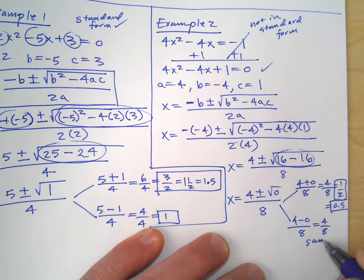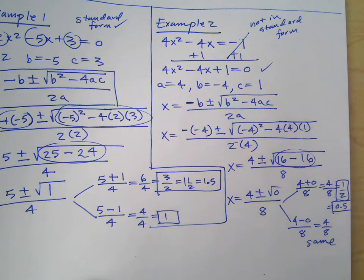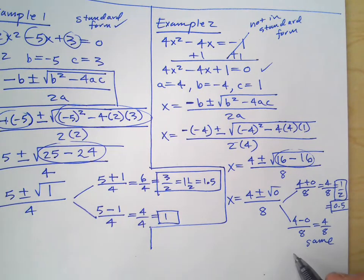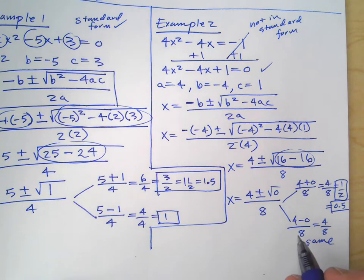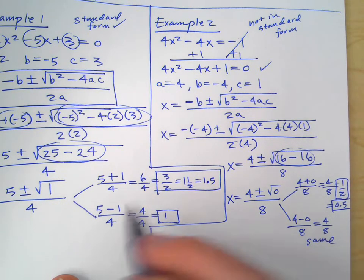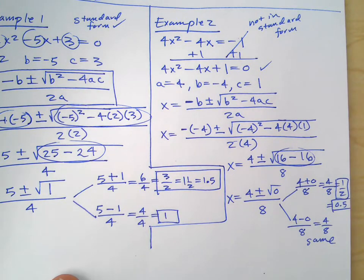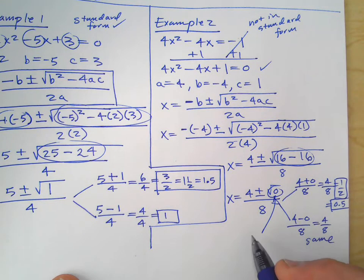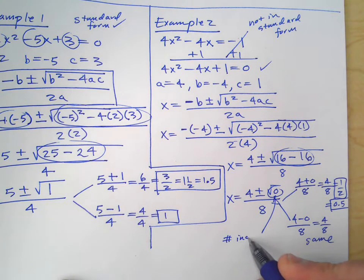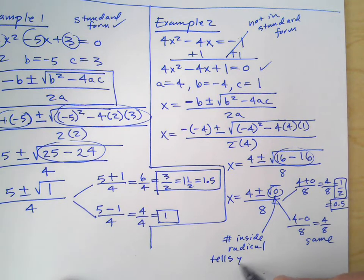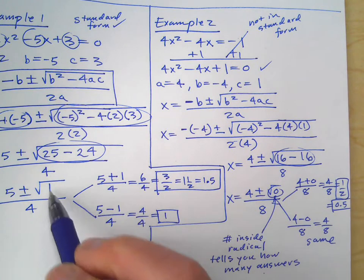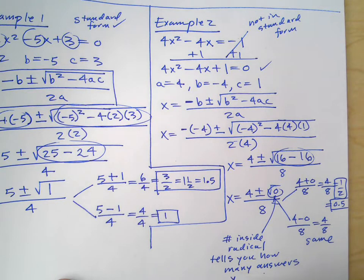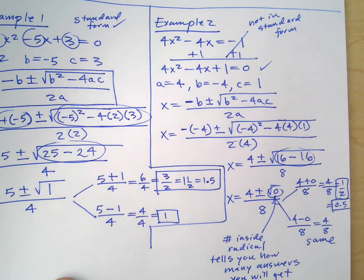This one's a funny one because we get 4 plus the square root of 0, which is 0, divided by 8, giving 4 over 8, which is 1 half or 0.5. The other answer is 4 minus 0 over 8, which also gives 4 over 8 — the same answer. We don't need to write the same answer twice. So this one gives you the same answer twice, which is kind of weird. That's going to lead us to our next point: there's a hint that tells you how many answers you're going to get. Usually we get two, but sometimes we get one, and sometimes we get none.